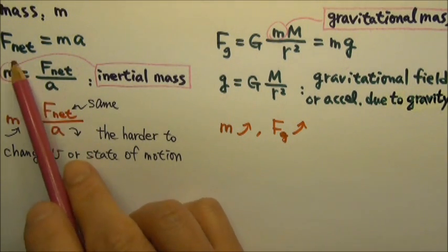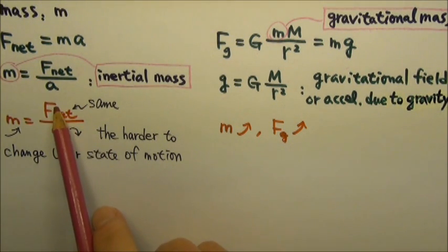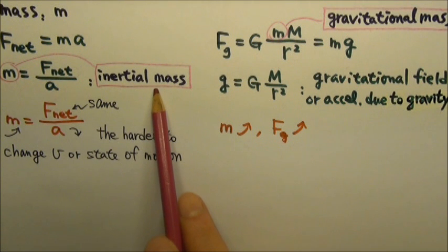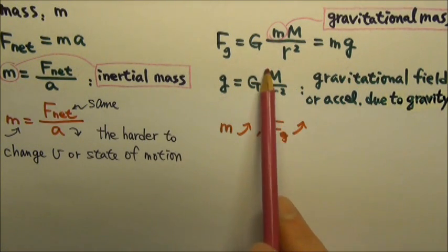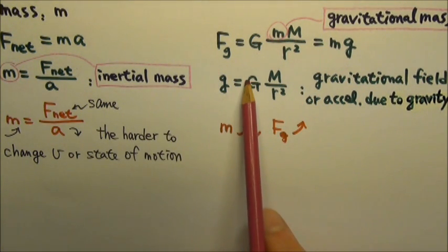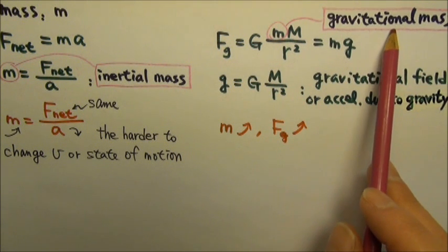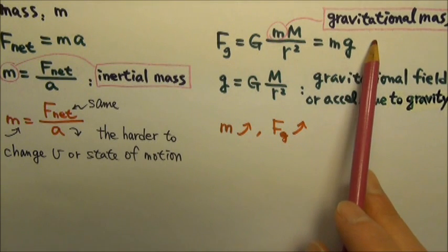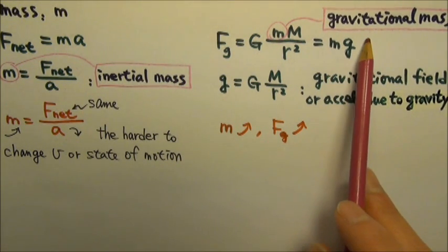When we define mass using Newton's second law, we call this mass the inertial mass. When we use Newton's law of gravitation to define mass, we call this mass the gravitational mass. As far as physicists can tell, those two kinds of mass are precisely equal to each other.